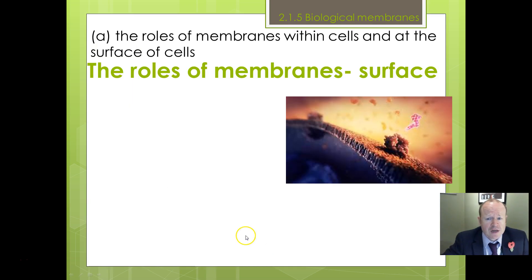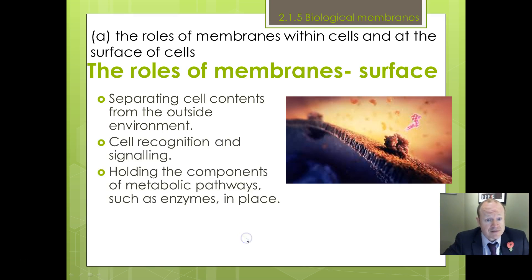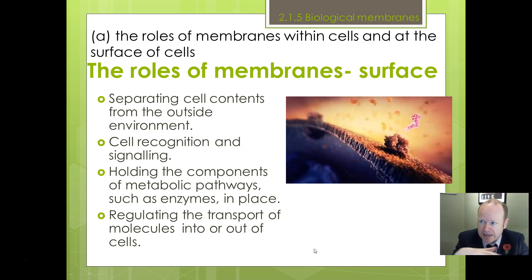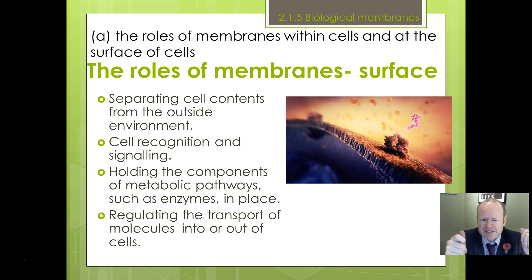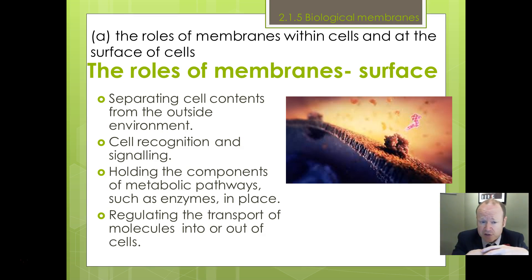Let's begin with function. What happens at cell membranes at the surface, or what is the point of cell membranes at the surface? It separates what's inside the cell from what's outside the cell. It can help to maintain an environment within cells — for example, you might want to keep certain chemicals within it. Cell recognition and signalling: it has things on the outside, receptors that new molecules can attach to.